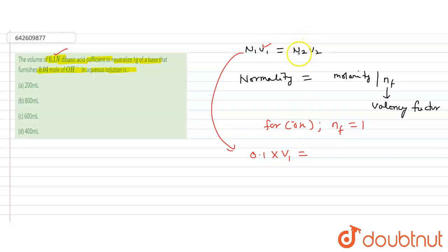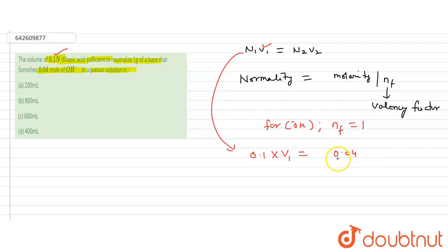To find normality of the base: normality = molarity / n-factor. One gram of base furnishes 0.04 moles of hydroxide ion, so molarity = 0.04 moles per liter of solution. The valency factor is 1, so normality of the base = 0.04. The volume of the base is taken as 1 liter.